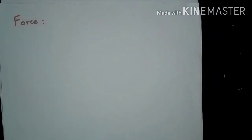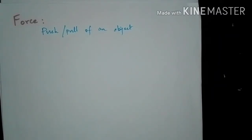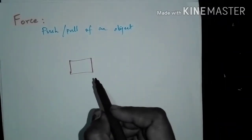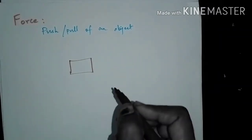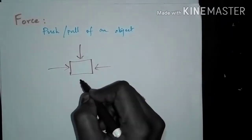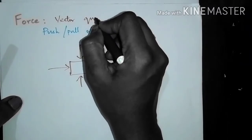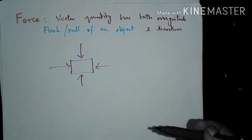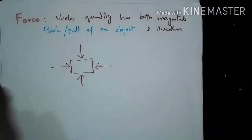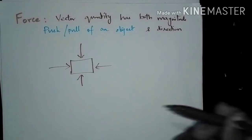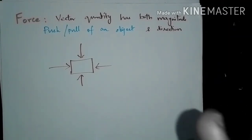Now let us see about force. Force is nothing but a push or pull applied on an object so that some work is done. In an object, we can apply force in any direction. Since force is a vector quantity, it has both magnitude and direction — the direction representing in which way the force is applied, and the magnitude representing how much force is applied on the object.